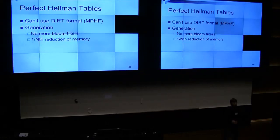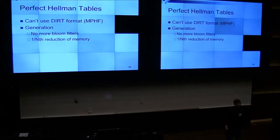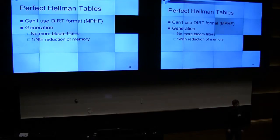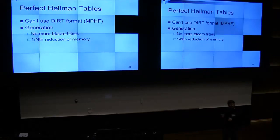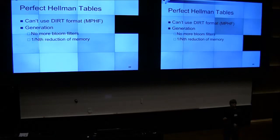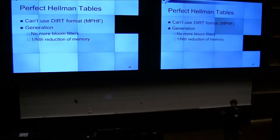Perfect Hellman tables. The difference between a Hellman table and a rainbow table: they have the same chain length — usually N to the one-third. The number of chains in a Hellman table is roughly N to the one-third, and for a rainbow table it's N to the two-thirds. For a Hellman table you'd have N to the one-third tables, versus one rainbow table. With a perfect rainbow table, every element is distinct — there are no duplicate passwords in any chain.